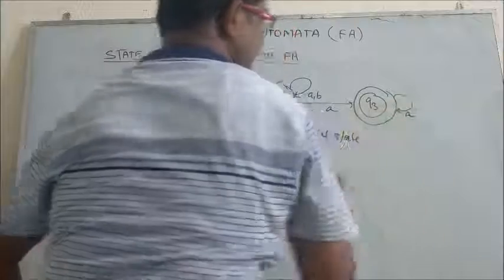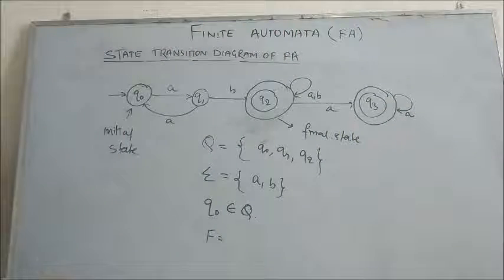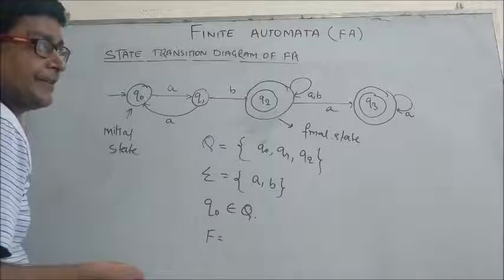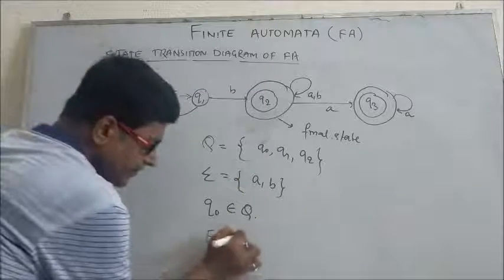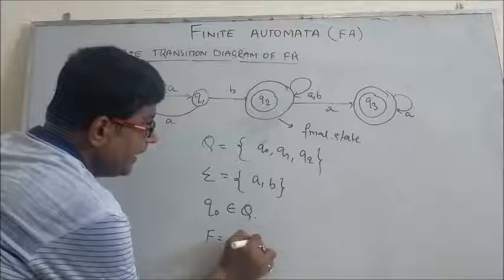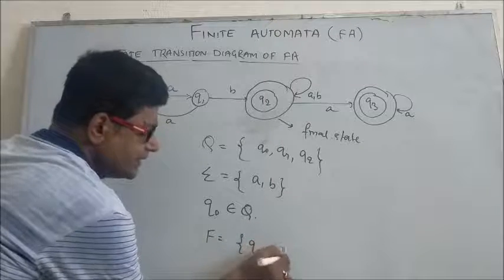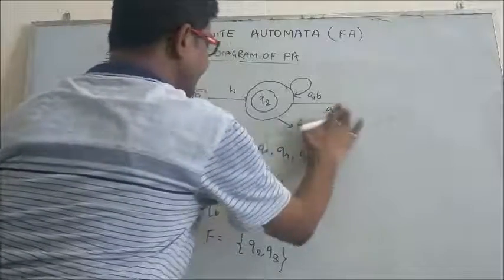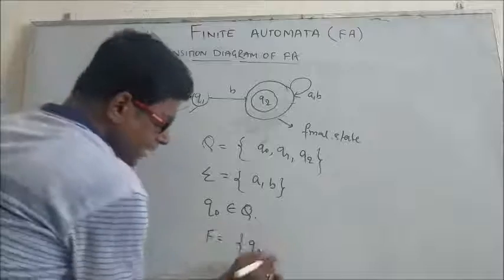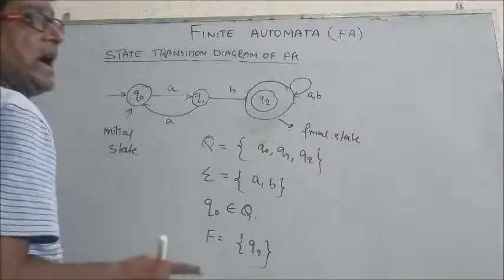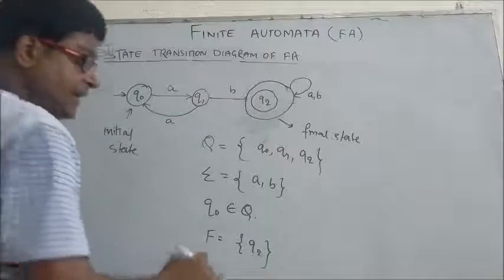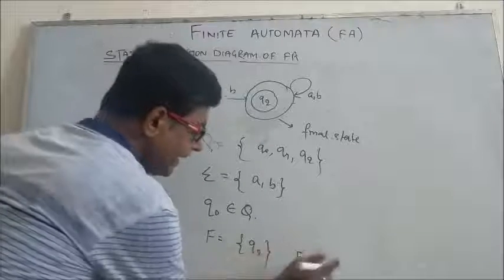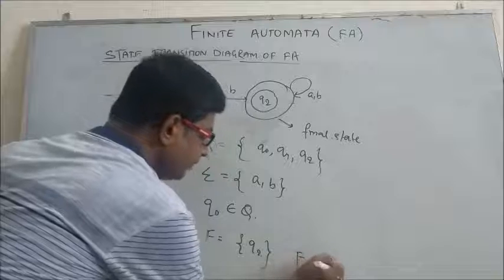If we add q3 as another final state, then we would have two final states: F = {q2, q3}. Otherwise, if we remove q3, then F = {q2}. In either case, the result is expressed as a set — that is why we say the set of final states F is a subset of Q.